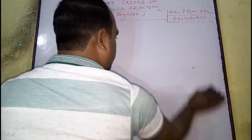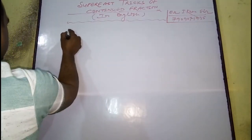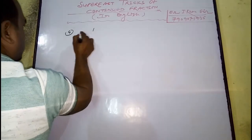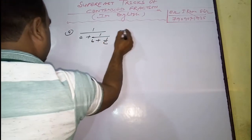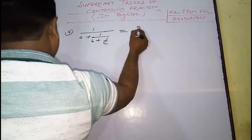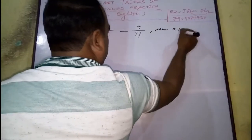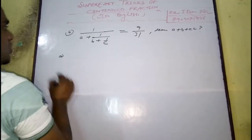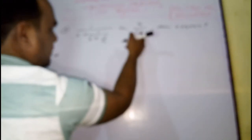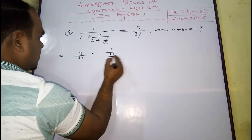Now I am taking some tougher examples. Suppose 1 by A plus 1 by B plus 1 by C is equal to 9 by 31. Then find the value of A plus B plus C. What you have to do is solve it from the RHS. Write the RHS and make it a reciprocal: 31 by 9.